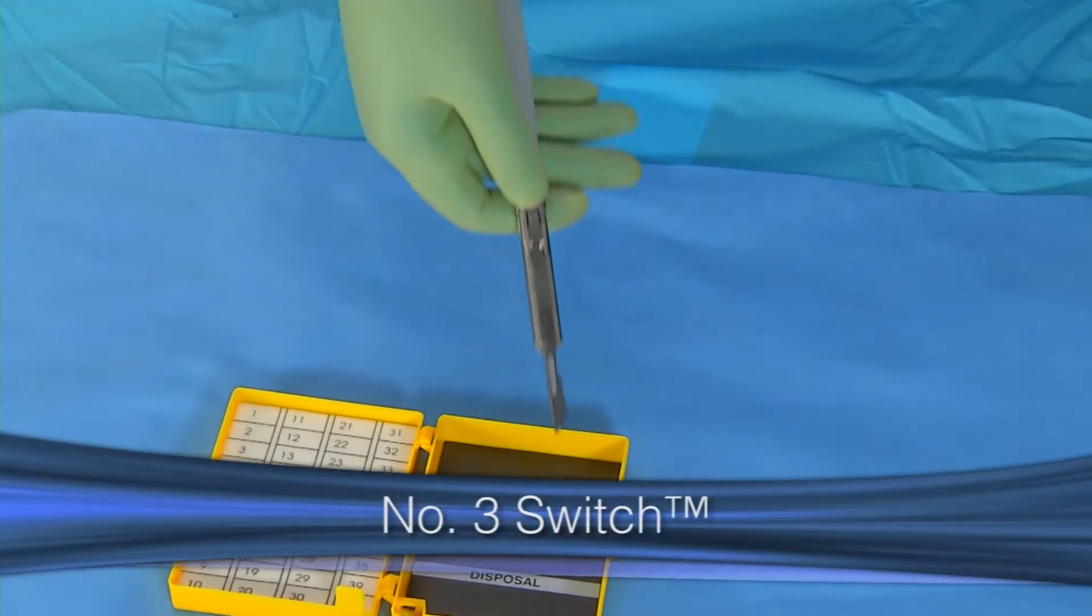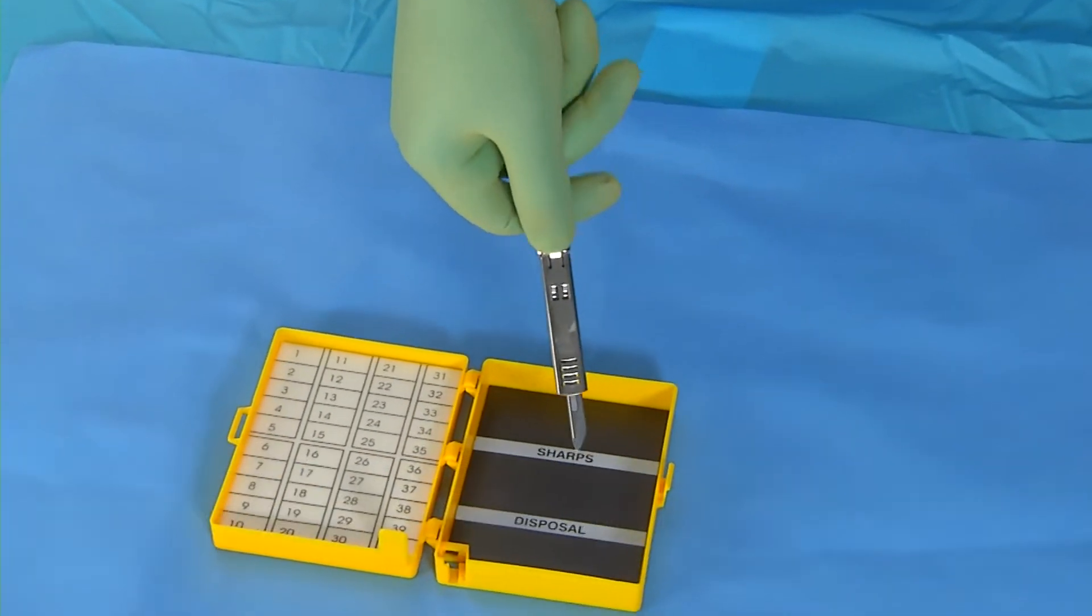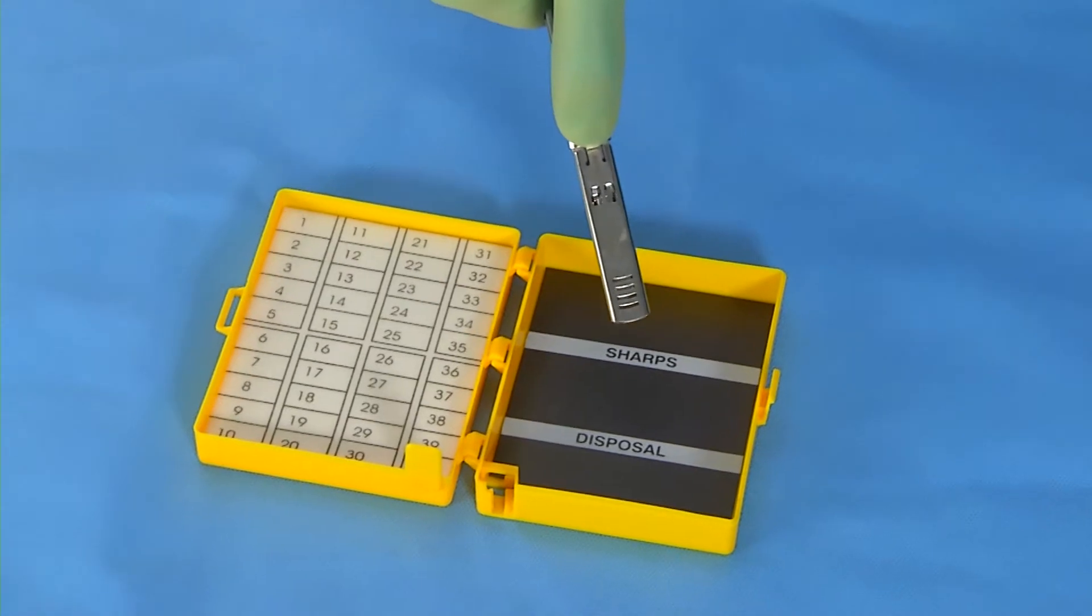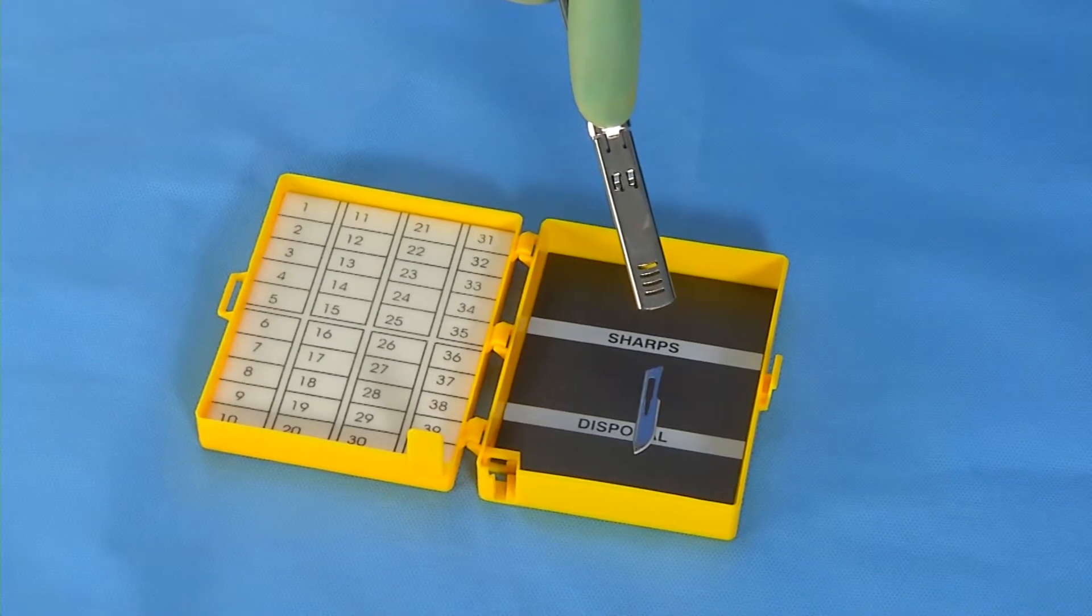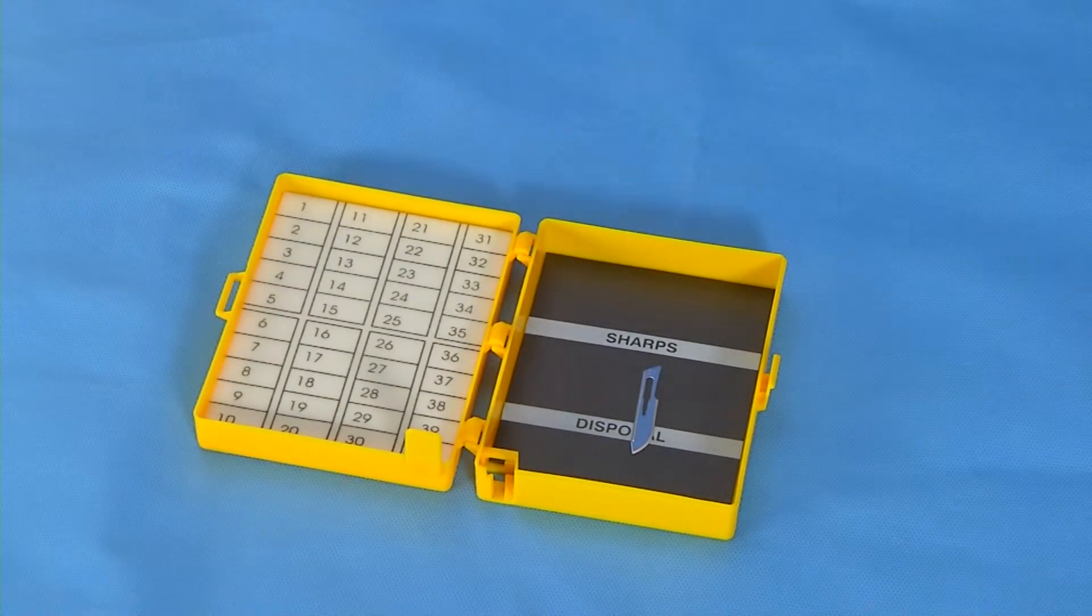Here is the number three safety scalpel. To remove the blade, push down on the side locking button and continue to move the shield until the blade is released from the handle and into the sharps disposal.